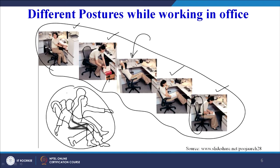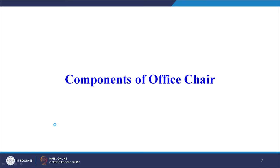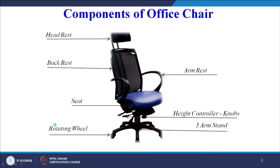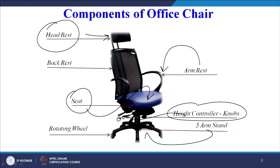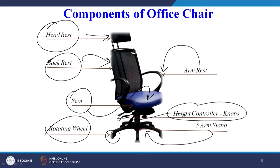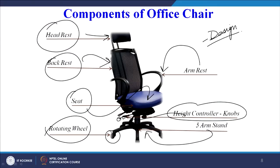We will now quickly have a look at the components of the office chair. This is one design: there is the head rest, arm rest, seat, a height control knob, and a 5-arm stand with rotating wheels. There is also the back rest. These are all components of an office chair, and we need to design each one of them. The design of each component requires a basic understanding of the various principles we have already covered.